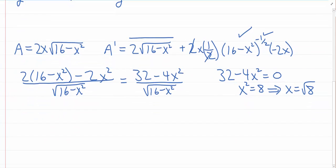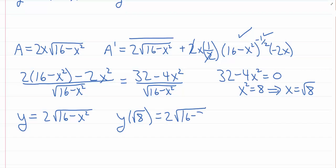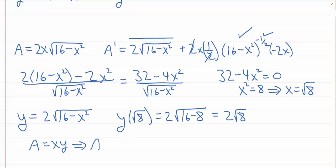Now I need to find Y. Y equals 2 times the square root of 16 minus X squared. Plugging in X equals the square root of 8, I get Y equals 2 times the square root of 16 minus 8, which is 2 times the square root of 8. So there's your Y. The area is X times Y, which is the square root of 8 times 2 times the square root of 8 — that's going to be 16. That's the optimal area for the rectangle.